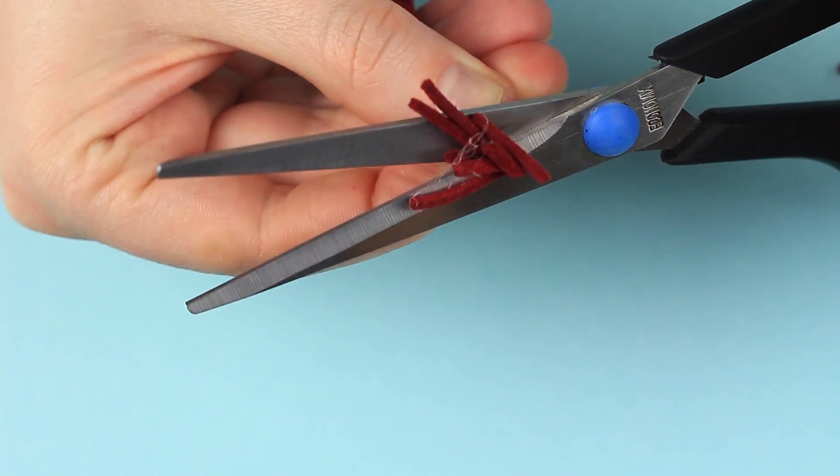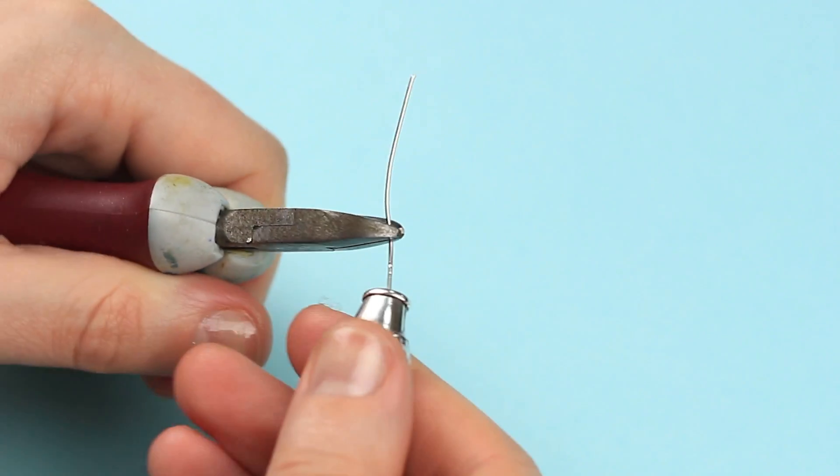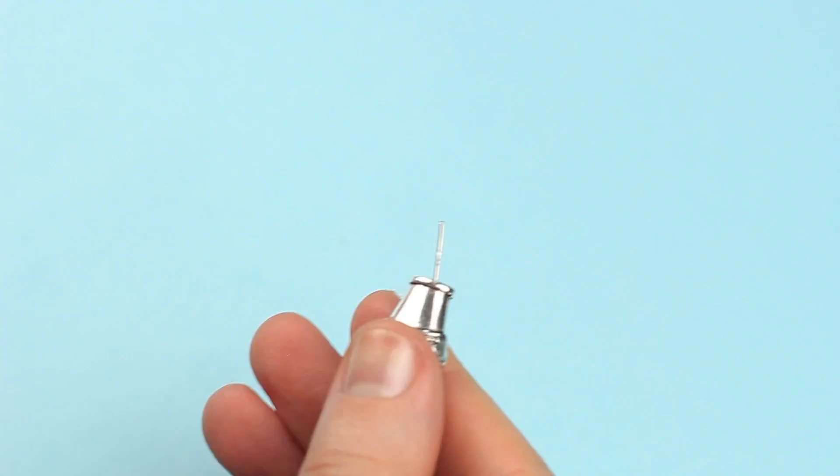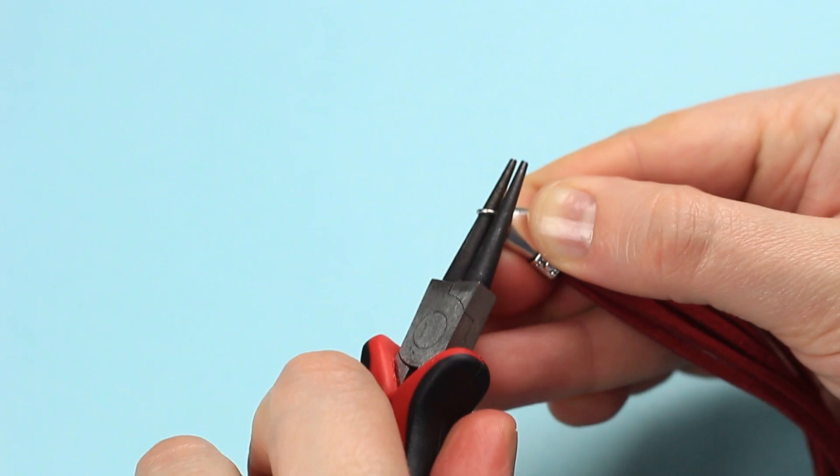Trim the edges. Cut off the excess pin using cutting pliers. Make a loop with round nose pliers.